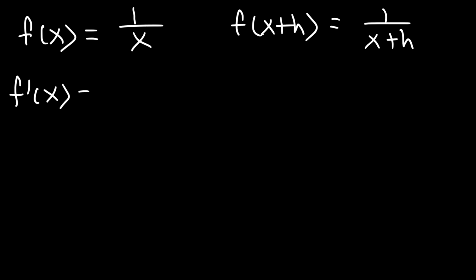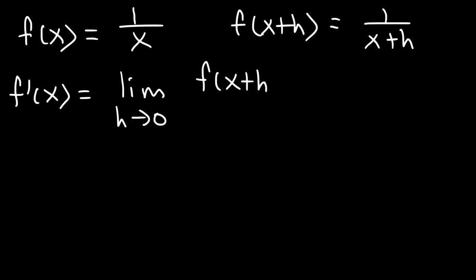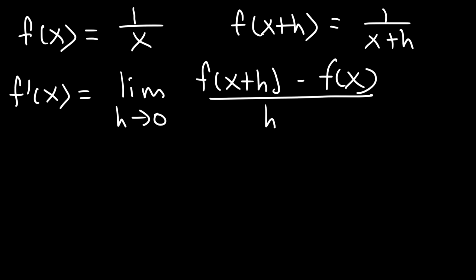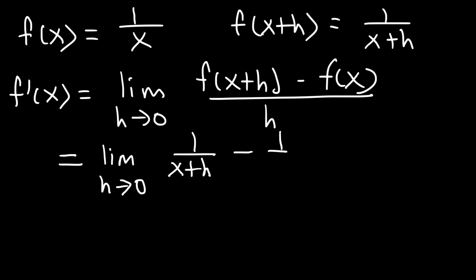Let's start with the formula. f prime of x is equal to the limit as h approaches 0 of f of x plus h minus f of x divided by h. Now f of x plus h is 1 over x plus h, and f of x is 1 over x, and this is all divided by h. So here we have a complex fraction.